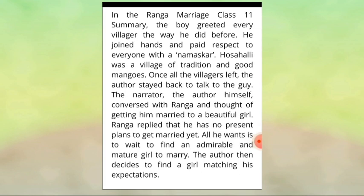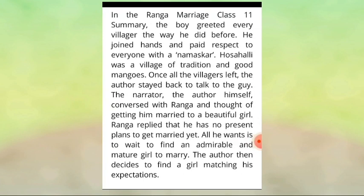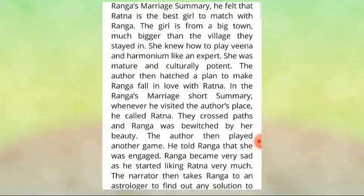Once all the villagers left, the narrator stayed back to talk to Ranga. The narrator conversed with Ranga and thought of getting him married to a beautiful girl. Ranga replied that he has no present plans to get married yet — all he wants is to wait to find an admirable and mature girl to marry. The narrator then decided to find a girl matching his expectations. He felt that Ratna was the best match for Ranga. The girl is from a big town, much bigger than the village they stayed in. She knew how to play Veena and Harmonium like an expert, and was mature and culturally refined.